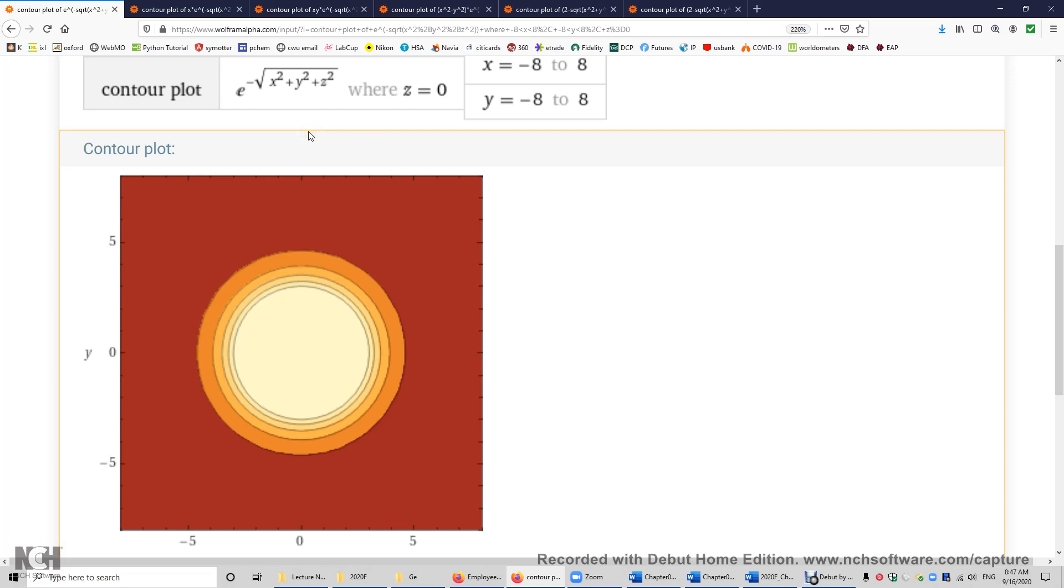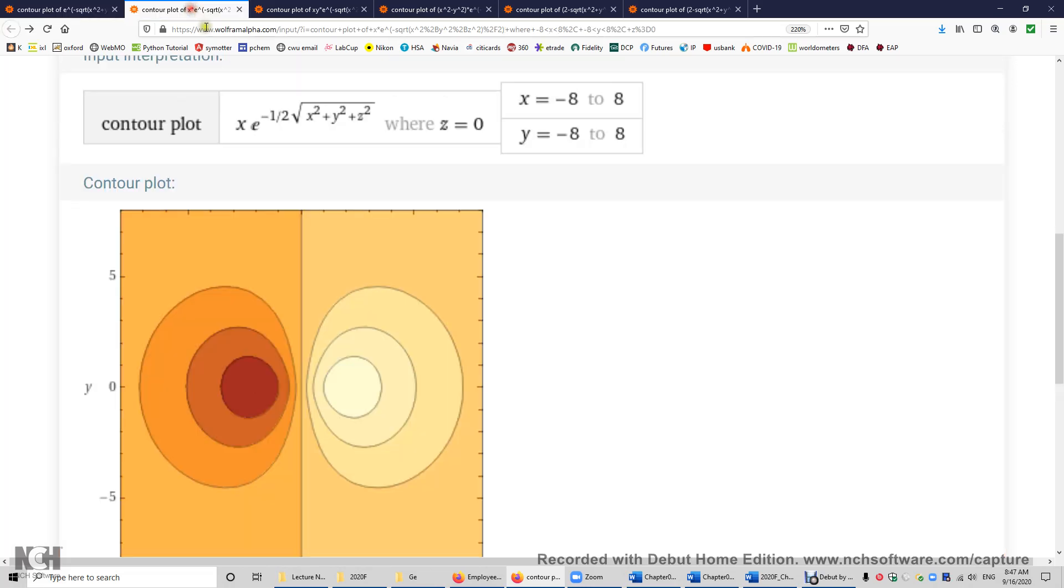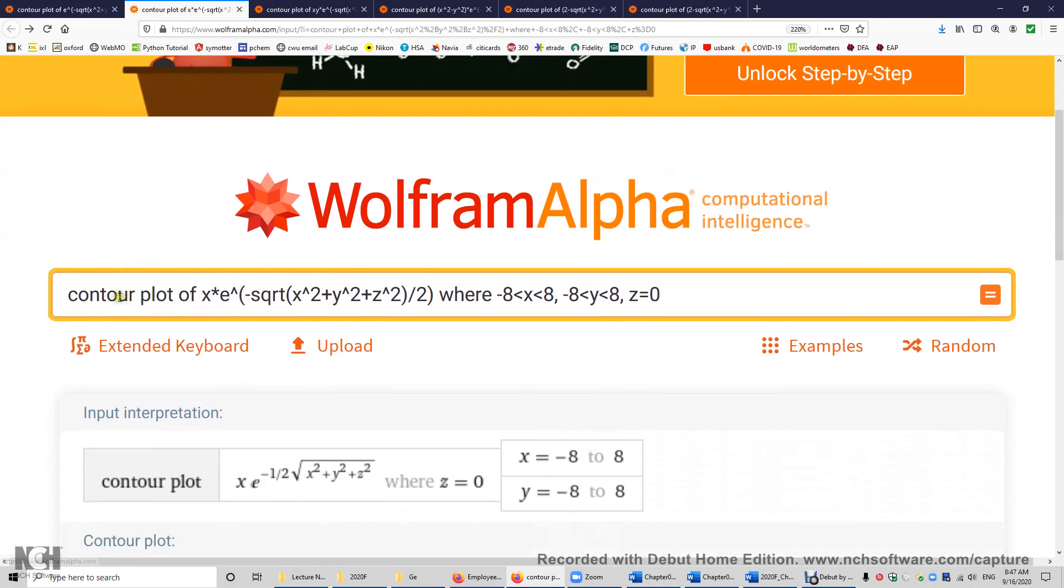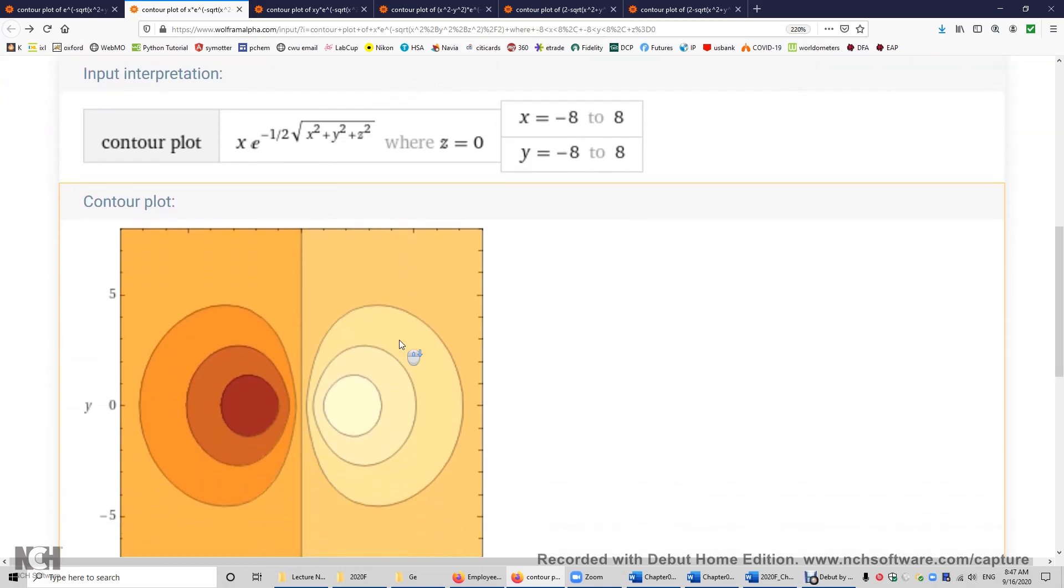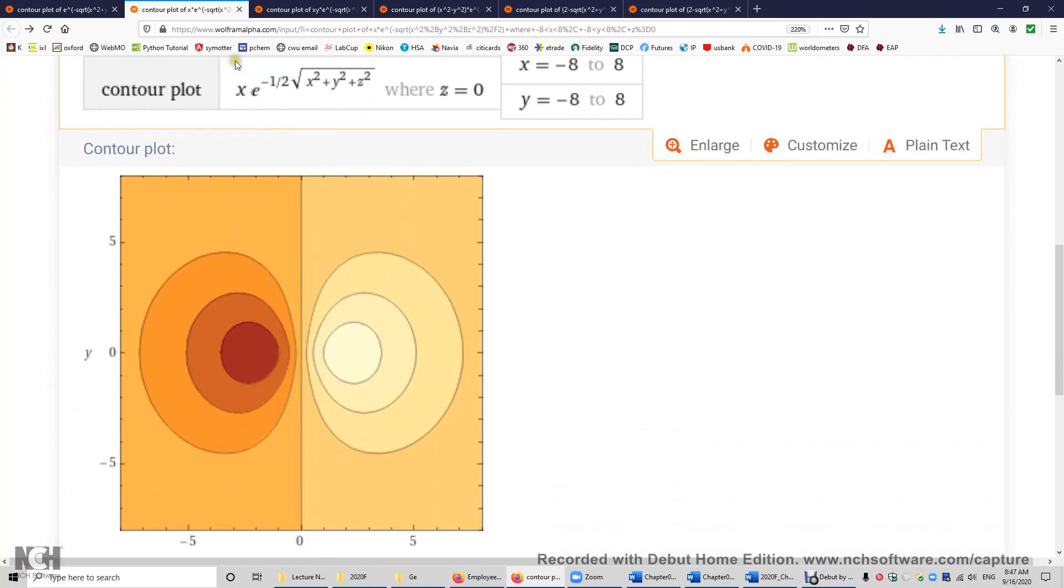Now I'm going to show you 2px. So this is how you draw the 2px orbital. You enter a contour plot of x times e to the power of negative r over 2. r is the square root of x squared plus y squared plus z squared. Again, I set z to 0 to make a contour plot. So it looks like this. And this is the equation, x times e to the power of negative r over 2.